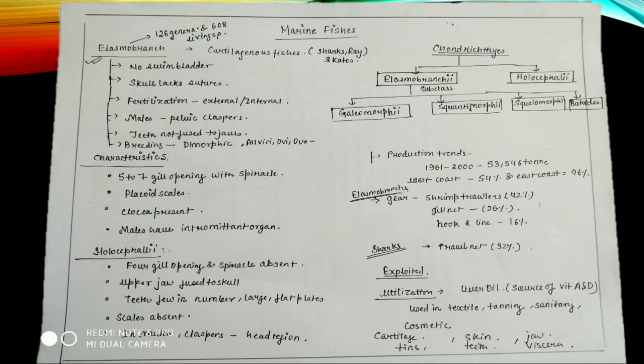Fertilization is external or maybe internal and the males are having pelvic claspers. Teeth are not fused to jaws. They are breeding are dimorphic or they are viviparous, oviparous, or ovoviviparous. These are the varying characteristics of Elasmobranchii.